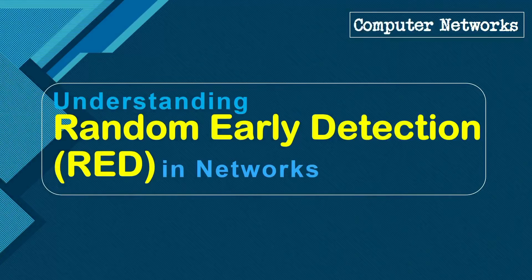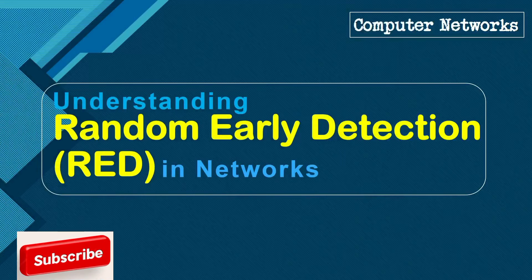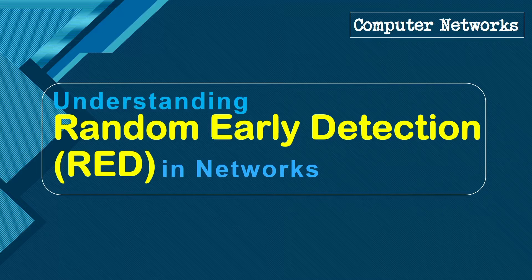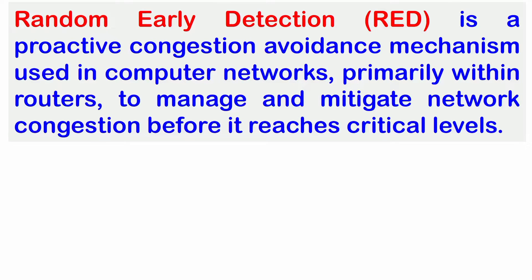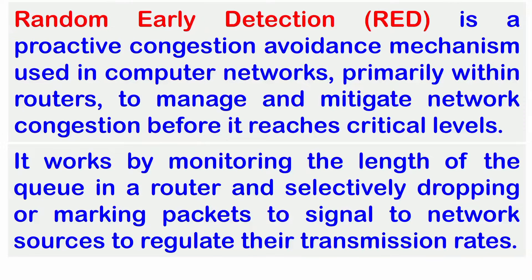This video will explain Random Early Detection, which is one of the congestion avoidance mechanisms in computer networks. Random Early Detection is a proactive congestion avoidance mechanism used in computer networks, primarily within routers, to manage and mitigate network congestion before it reaches critical levels. It works by monitoring the length of the queue in a router and selectively dropping or marking packets to signal network sources to regulate their transmission rates.